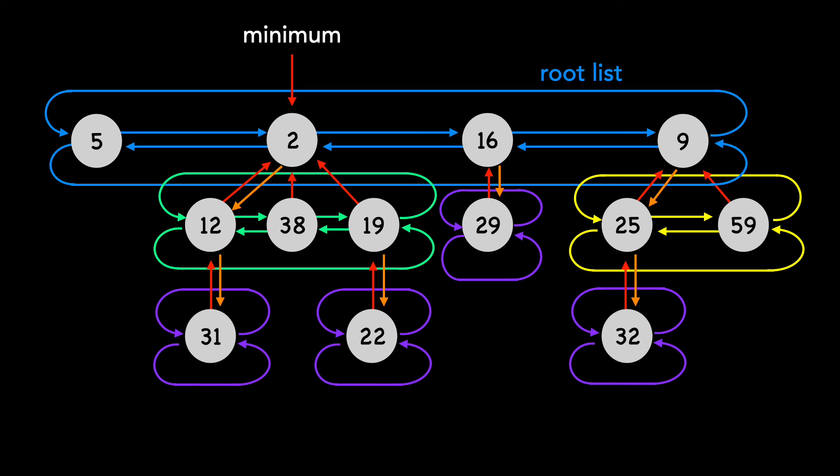We'll keep a pointer to the minimum node, which is the smallest root in the root list. We'll also keep track of n, which is the total nodes in the Fibonacci heap.